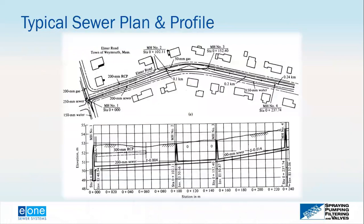A typical gravity sewer layout shows 200 mm sewer running at a constant slope, with manholes placed where pipe changes direction and slope. At junctions, manholes are always required. In practice, manholes in a typical system are spaced well under 150 meters apart because of the frequent changes in sewer direction and slope, as illustrated in a layout with manholes at numbers 1, 2, and 3.